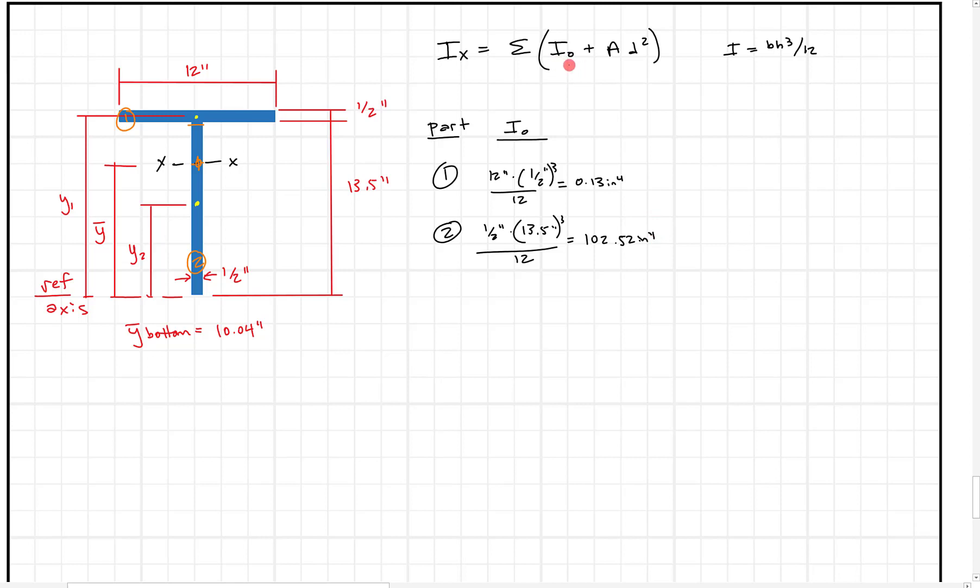And then what we want to do is we want to go ahead and find A, D, and eventually Ad squared here. So I'm going to write down A. And A is, we've already found it up above. All this is going to be is for part one, 12 times a half is going to be six inches squared. And an A for this section for part two is going to be a half times 13 and a half. And that's going to be 6.75 inches squared.